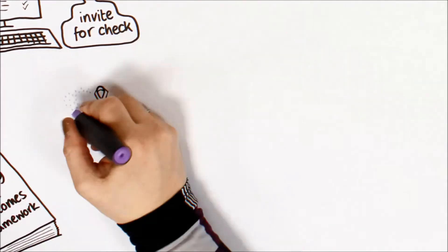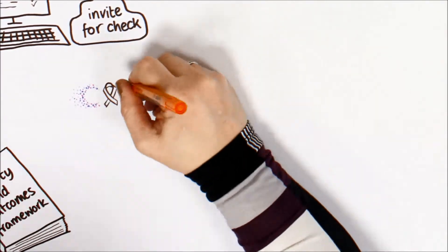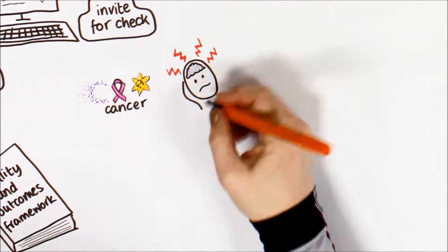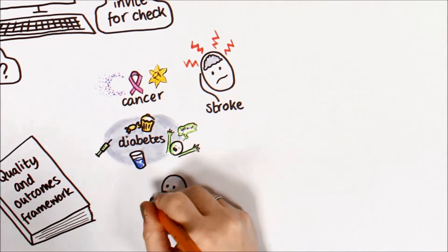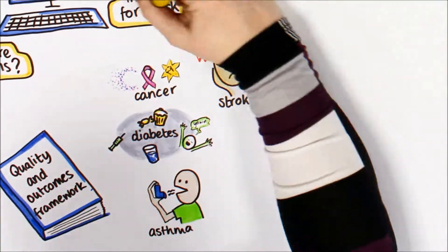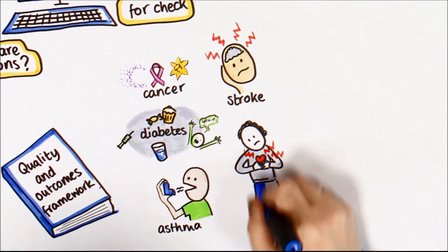The Quality Outcomes Framework contains a list of common long-lasting health problems. This included conditions such as cancer, stroke, diabetes, asthma, and heart problems.